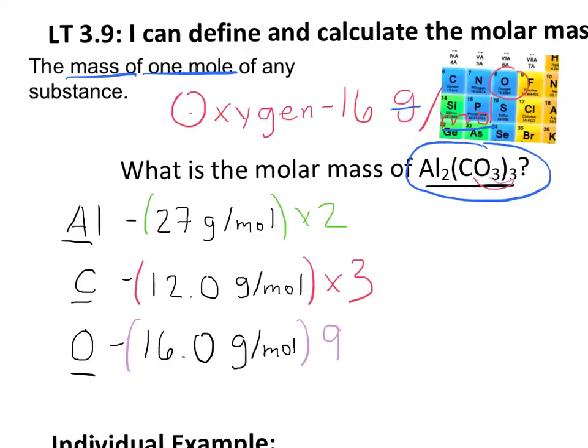Now if I multiply these three numbers across, I'll have the total mass for each element. So the total mass for aluminum is 54. The total mass for carbon, or 12 times 3, is 36. And the total mass for oxygen, or 16 times 9, is 144.